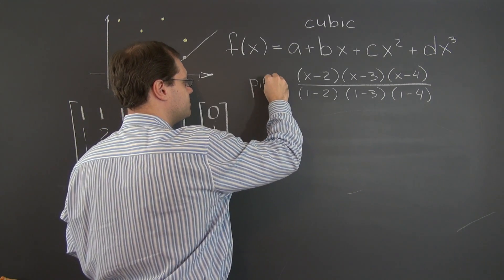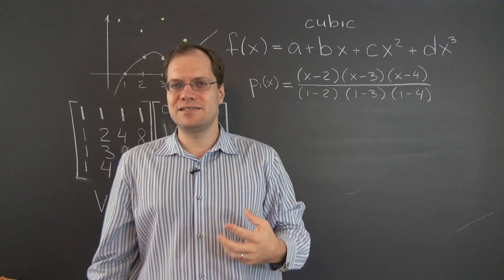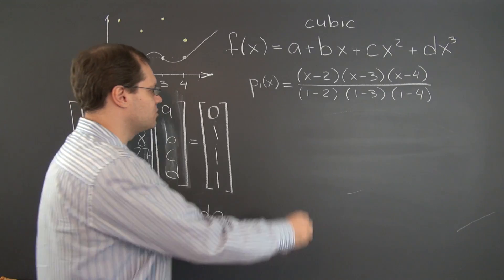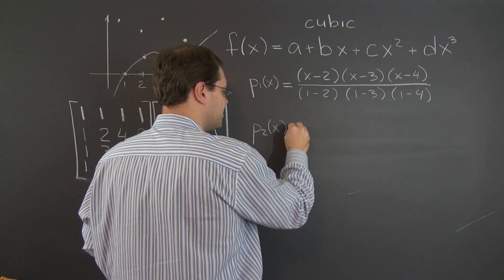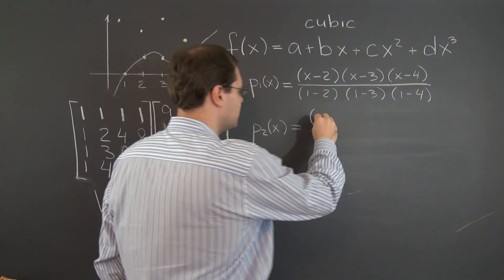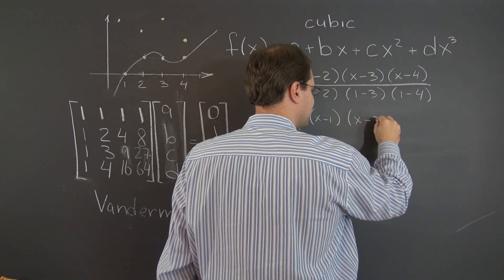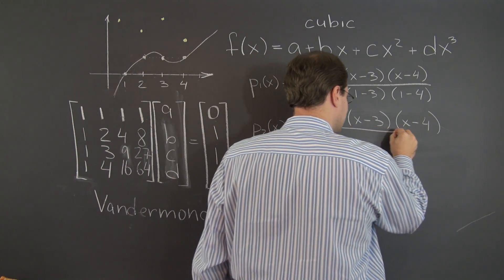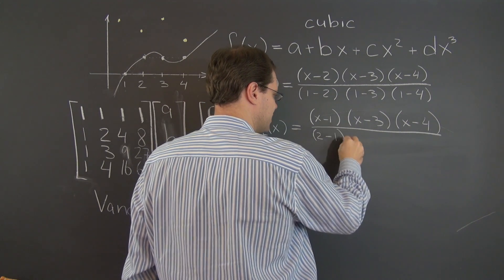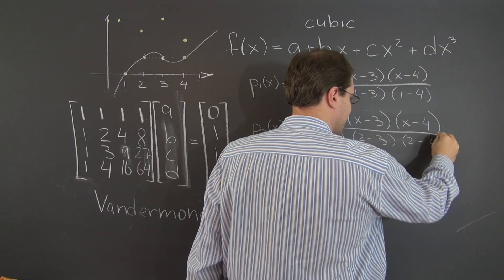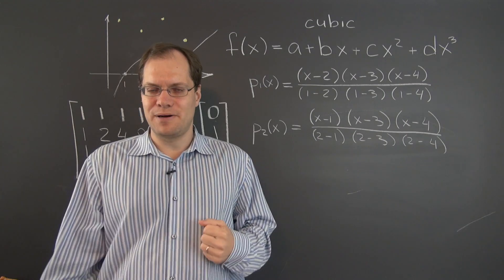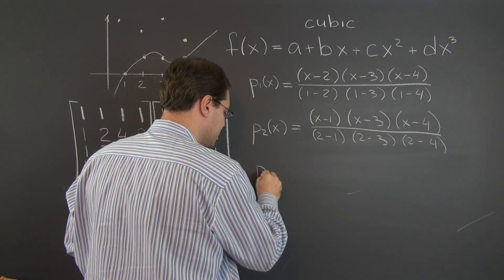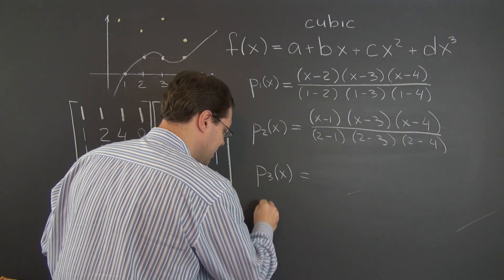So we can call this P1 of x. So P1 of x has the desired property that at x equals 1, it equals 1 and at all the other points that are of interest to this problem, it equals 0. And of course, we can construct P of 2 similarly. And now we have to make sure that it's 0 at 1, 3 and 4. So we're going to multiply x minus 1 by x minus 3 by x minus 4. So that guarantees being 0 at 1, 3 and 4. And we just have to make sure that at x equals 2, it equals 1. So why don't we divide it by 2 minus 1, 2 minus 3 and 2 minus 4. And there you go. This is our second desired polynomial. It's 1 right here and 0 at all of the remaining points. And you can see that we could similarly construct P of 3, I won't write out what it is, and P of 4.